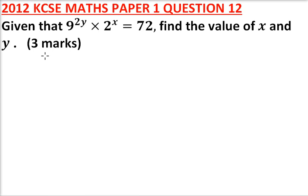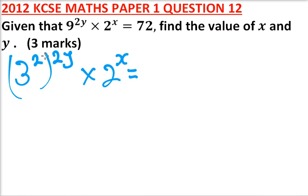So we'll start by writing 9 in terms of powers of 3, so 3 squared. You can write it: this is 2y multiplied by 2 to the power x is equal to 72, which can be written as 8 times 9. So this is 2 to the power 3, that is the same as 8 multiplied by 3 to the power 2. That is 8 times 9 is 72.